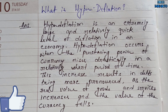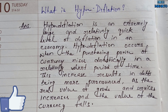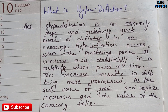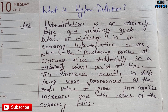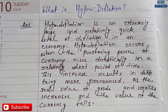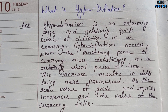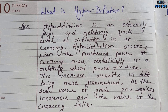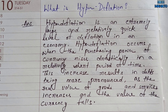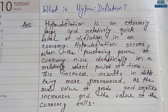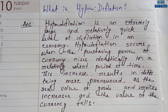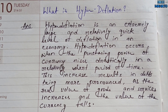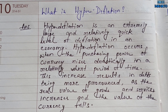Today's topic is hyper deflation. Hyper deflation is an extremely large and relatively quick level of deflation in an economy. Hyper deflation occurs when the purchasing power of currency rises drastically in a relatively short period of time.